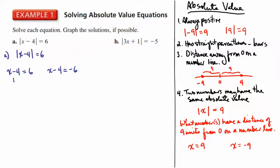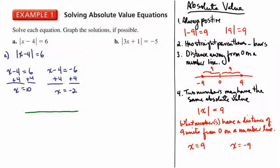We solve both equations. Adding 4 to both sides of the first gives x equals 10. Adding 4 to both sides of the second gives x equals negative 2. So these are the two numbers that, when you subtract 4 from them and take the absolute value, equal 6.